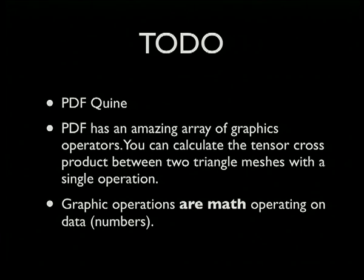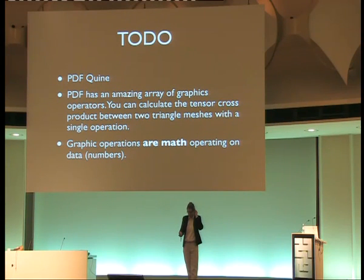There's an amazing number of graphics operators available, like tensor cross product triangle meshes and so on. I believe it's possible to exfiltrate data by taking the data you want to hide, XORing it or doing some kind of alpha channel blending with white noise, sticking both the white noise and the output into the PDF, and then having the PDF recombine them graphically to get the original data back out. I believe it should be possible, but I haven't actually tested this.